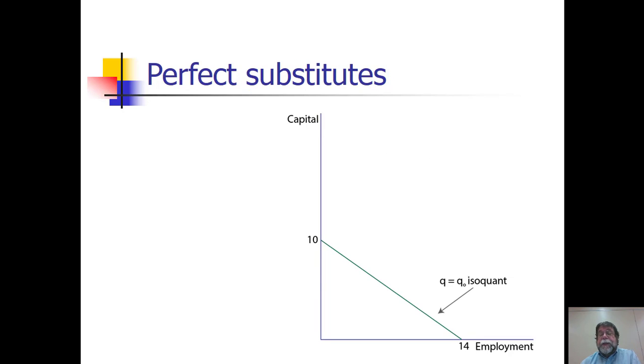We're going to consider the case of perfect substitutes. Perfect substitutes are said to occur when we have linear downward sloping isoquants. In this case, there's a constant rate at which you're able to substitute capital for labor. A firm in this example could produce the same amount of output with 10 units of capital, with 14 units of labor, or any linear combination in between those.